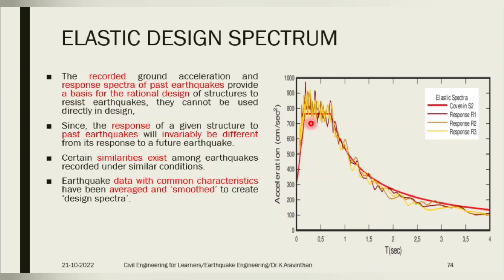If a building has two floors, it has two natural frequencies. The lowest natural frequency is called the fundamental natural frequency. For example, if frequencies are 40 and 30 radians per second, the fundamental natural frequency is 30. Converting this to time period — say 0.3 seconds — you locate it on the spectrum graph and read off the corresponding acceleration. This acceleration is then applied as a horizontal force to design the structure safely against earthquakes.